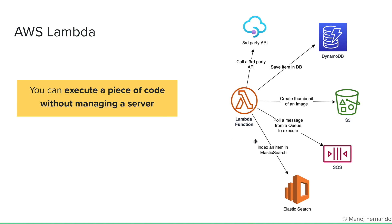Let's say that you want to get weather information from a third-party API — let's say the OpenWeatherMap API — and you want to get the weather information every hour and store it in a database. You can create a Lambda function with the code to query the third-party API, get the data, and save it in a DynamoDB table. If you want to invoke this Lambda function every hour, you can write a cron job. The CloudWatch cron job will invoke this Lambda function every hour, and it will fetch the data and store it in DynamoDB.